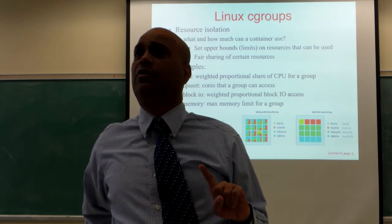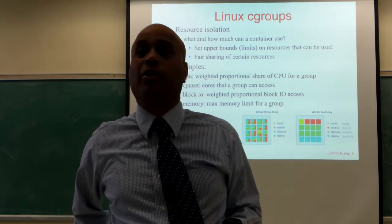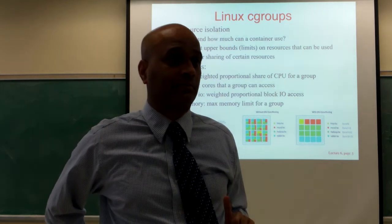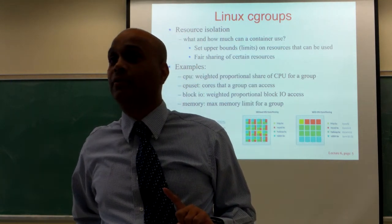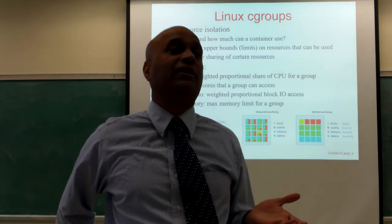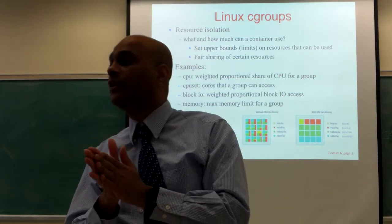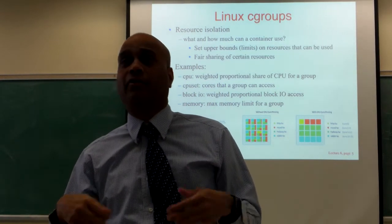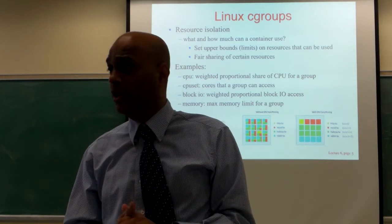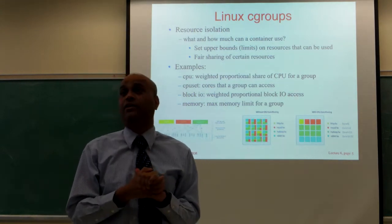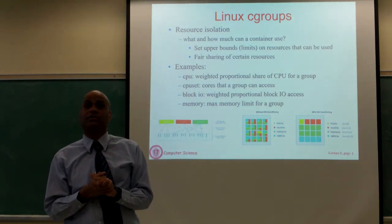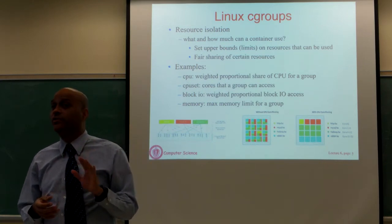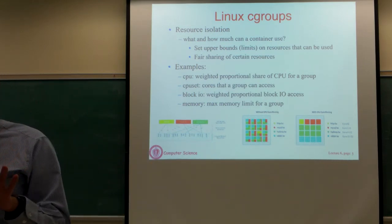If you remember three or four lectures ago when we were talking about uniprocessor scheduling, we talked about lottery scheduling. The lottery scheduler essentially says you can allocate a certain number of lottery tickets to a process or a group of processes, then you run a lottery and if you win you get scheduled. By controlling the amount of lottery tickets, you can probabilistically determine how much CPU time that process takes. That was one way by which we could control the CPU time allocated to a process — but that was a randomized algorithm.